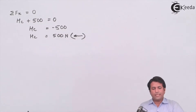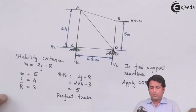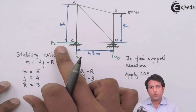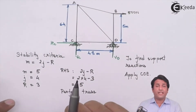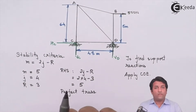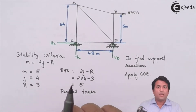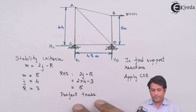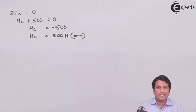I can see that the assumption I had made for the direction of HC was towards the right, but the answer I am getting is negative. This indicates that my assumption of the reaction being towards the right is wrong. I have to change the direction and make it towards the left, so HC is acting towards the left.